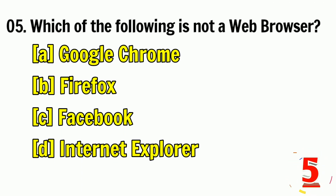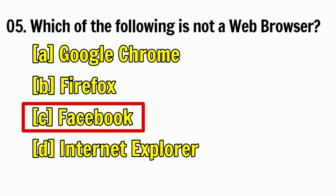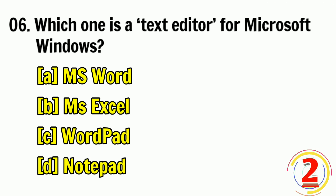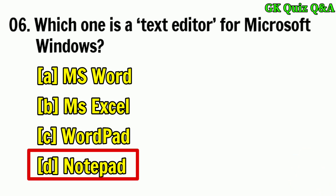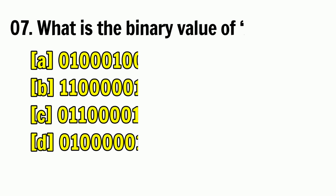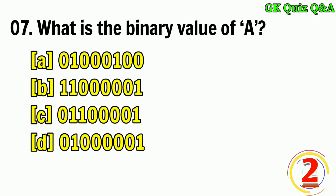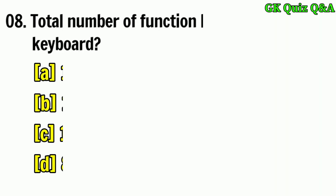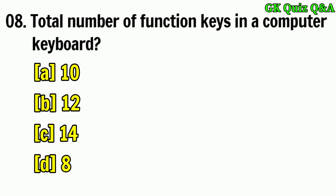Answer: C — Facebook. Which one is the text editor for Microsoft Windows? Answer: D — Notepad. What is the binary value of A? Answer: D — 01000001.